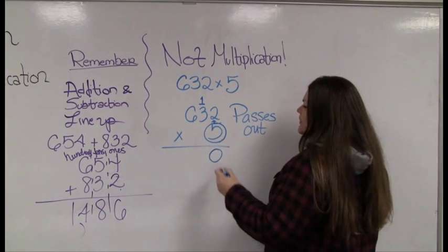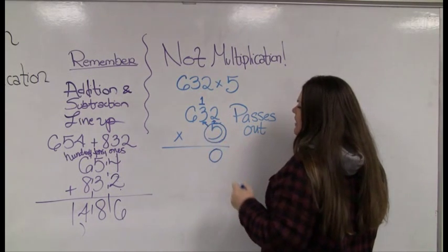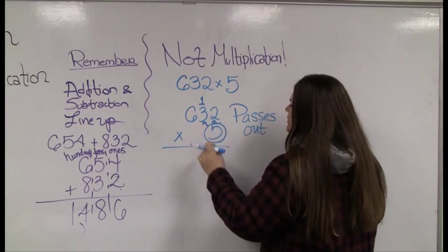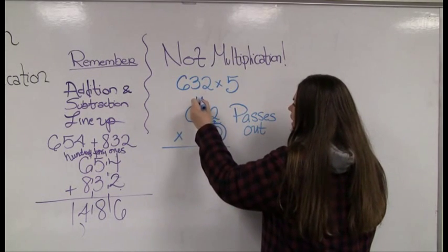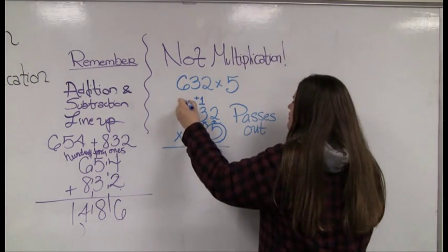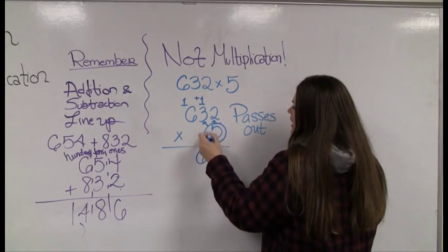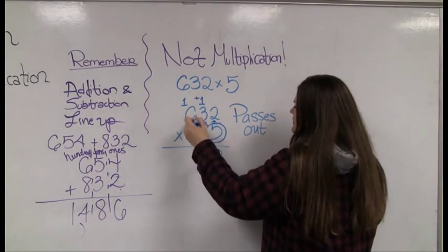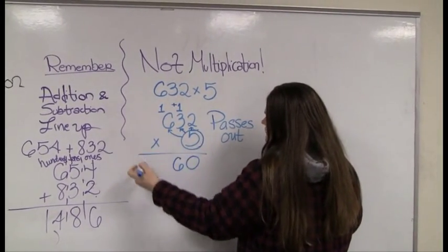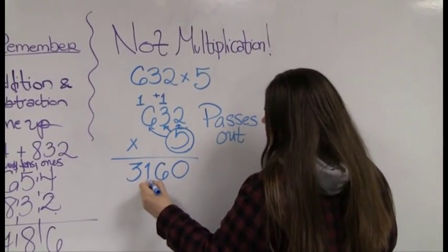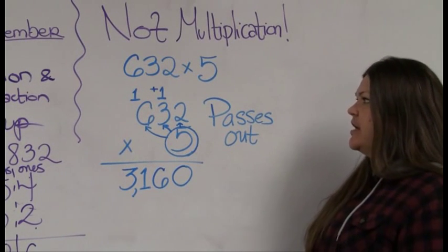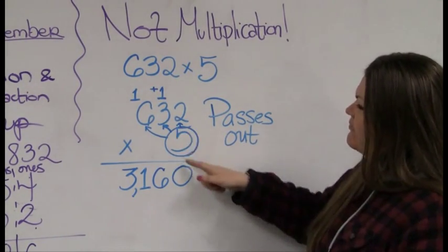So two times five is ten — drop down the zero, bring up the one. Now I pass five out again to the three in the tens column. Five times three is fifteen, plus one carried is sixteen — six drops down, one carries. Five times six is thirty, plus one is thirty-one. There's no place left to carry, so the whole thirty-one comes down, giving three thousand one hundred and sixty.